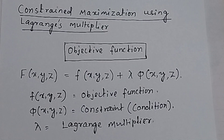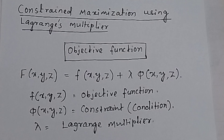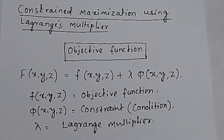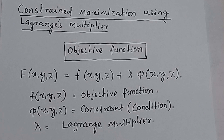What is constraint maximization using Lagrange multiplier? The process of optimizing — that is, maximizing or minimizing an objective function with some variables having a constraint — is called constraint maximization or constraint optimization.